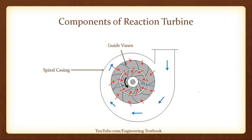Guide Vanes. This component of the reaction turbine is attached to the spiral casing. The most important function of guide vanes is to ensure that water hitting the impeller blades is directed along the turbine axis. Otherwise, the water will create a strong vortex as it passes through the volute casing, making the impeller blades inefficient to rotate. With modern turbines, the angles of these vanes are flexible. According to turbine load, the flow of water can be adjusted by changing the angle of these guide vanes.